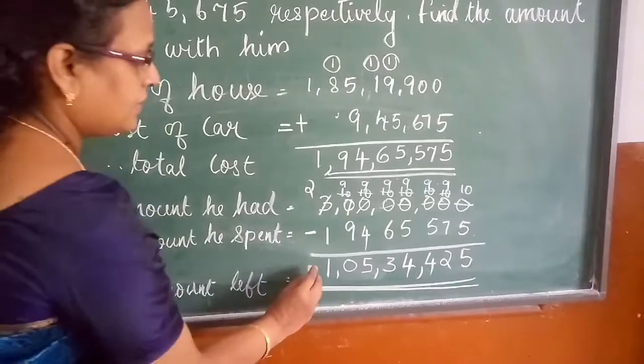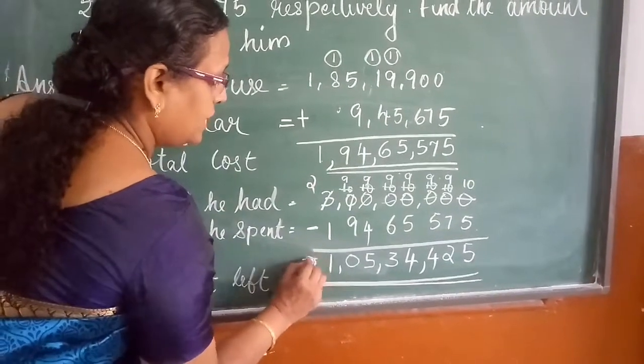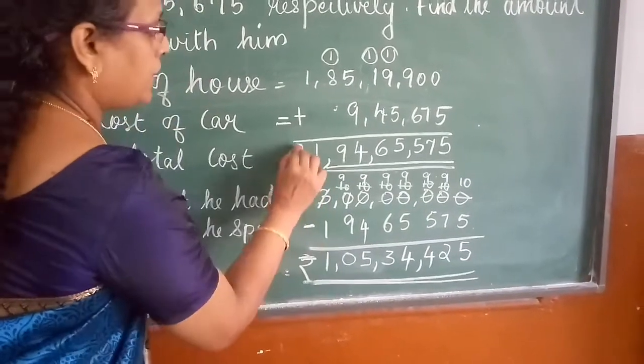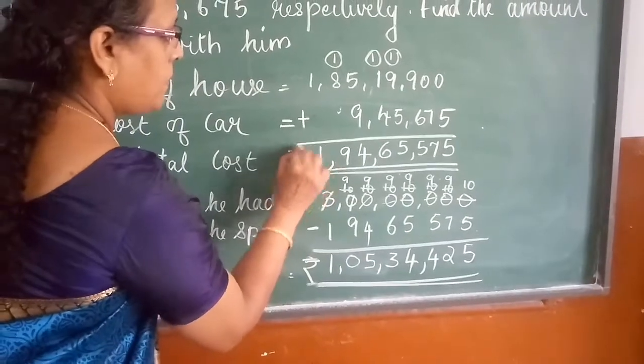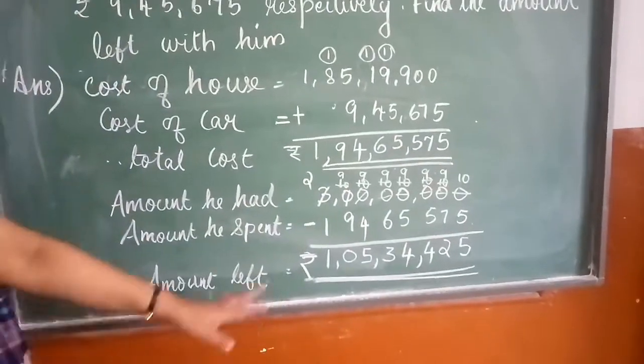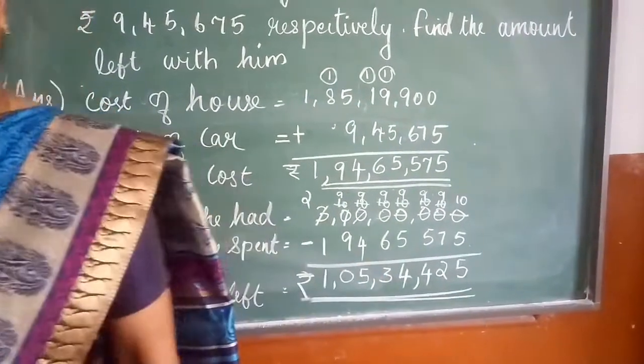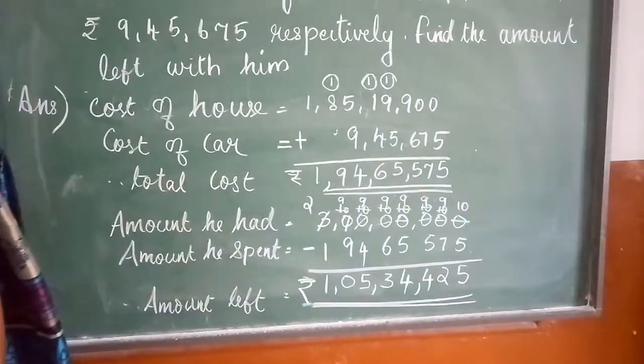How many rupees? Rs. 1 crore 5,34,425. Hope you all understand this module. Thank you.